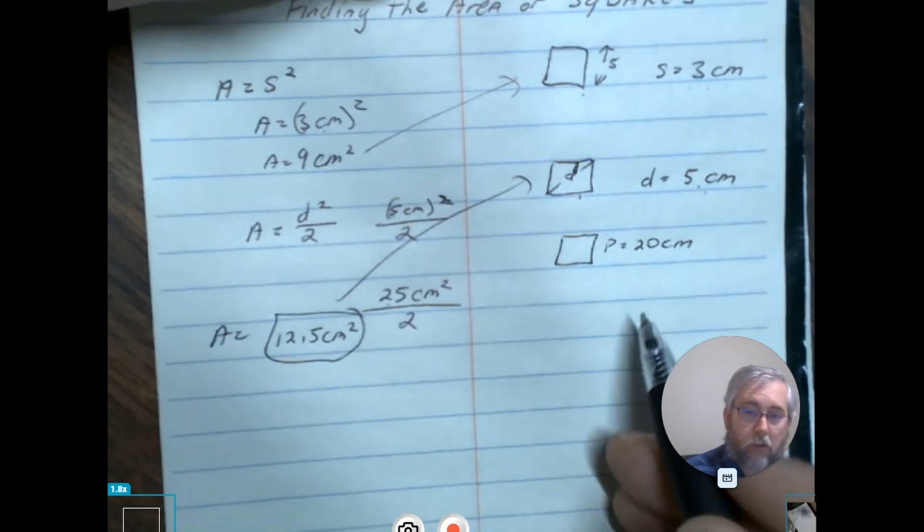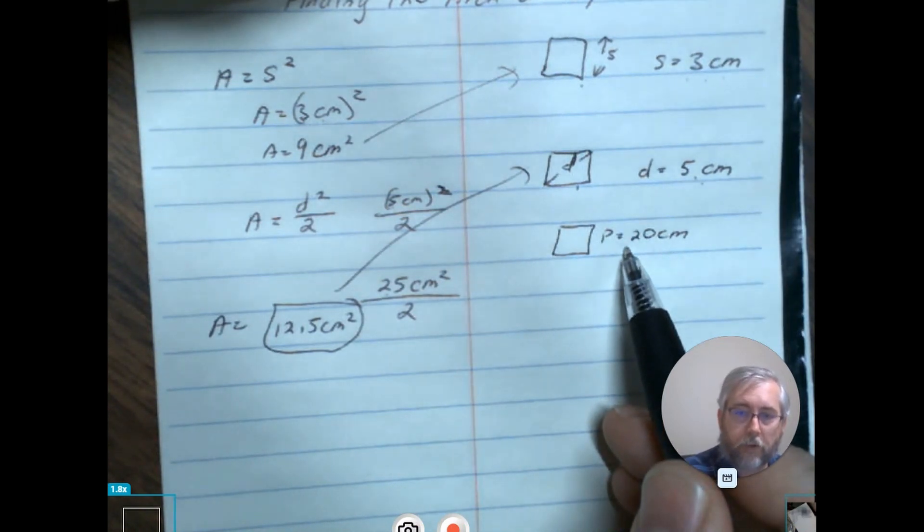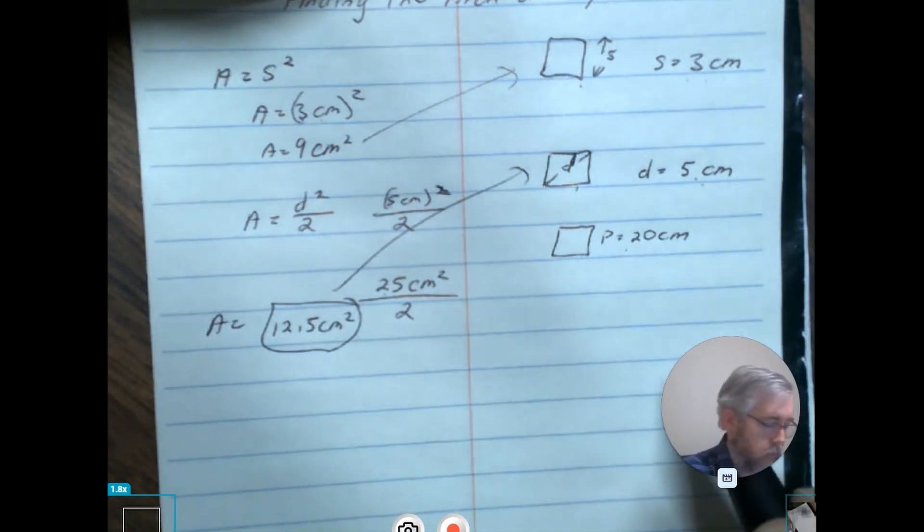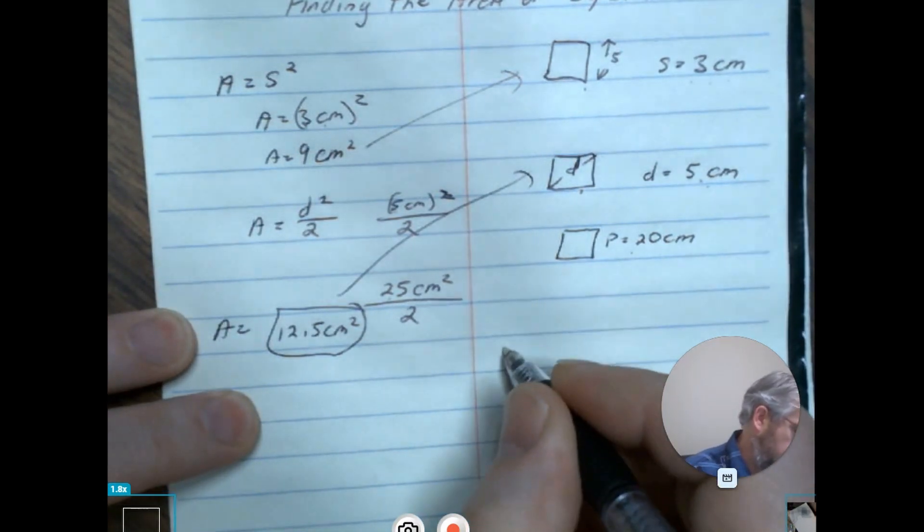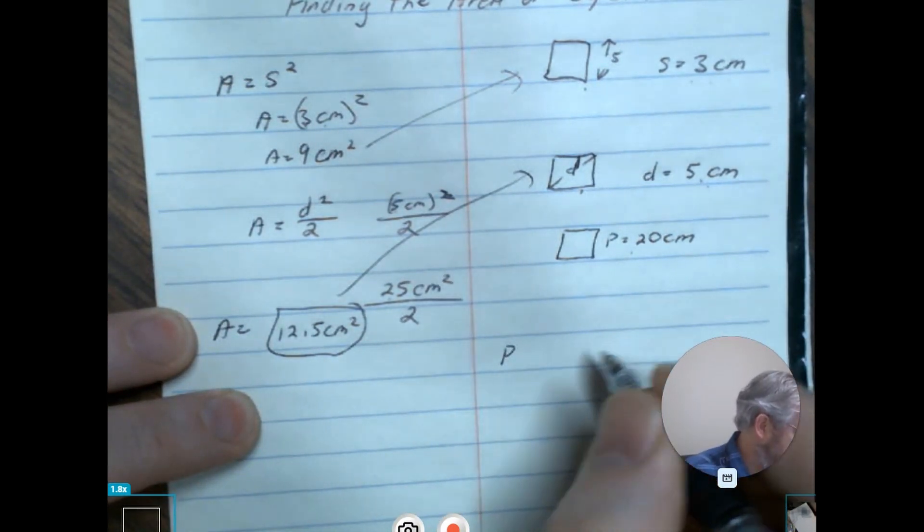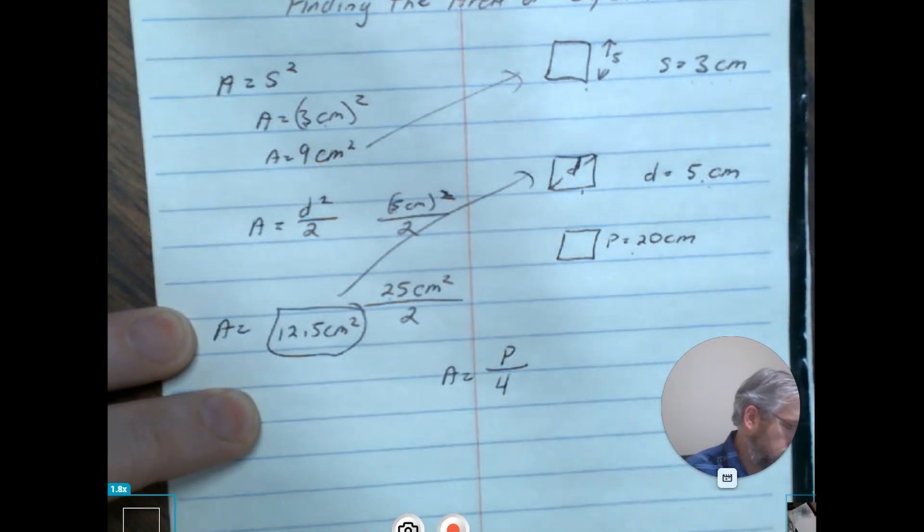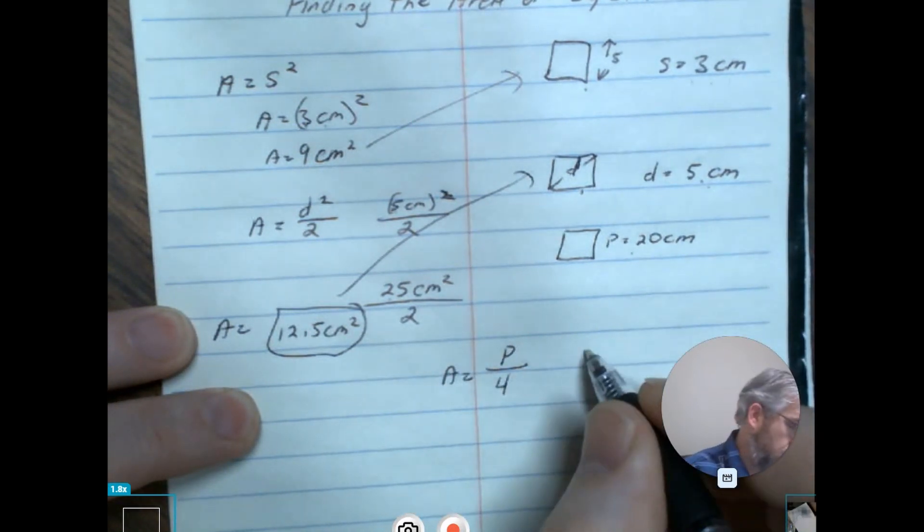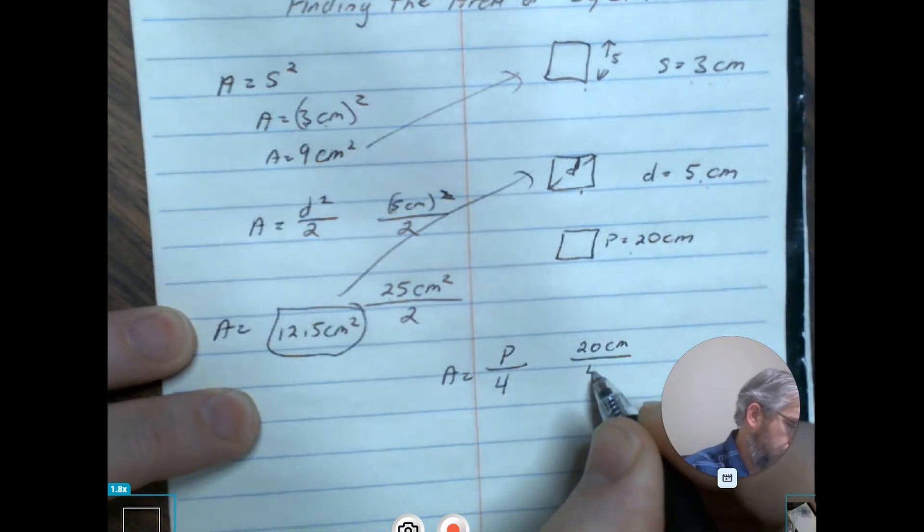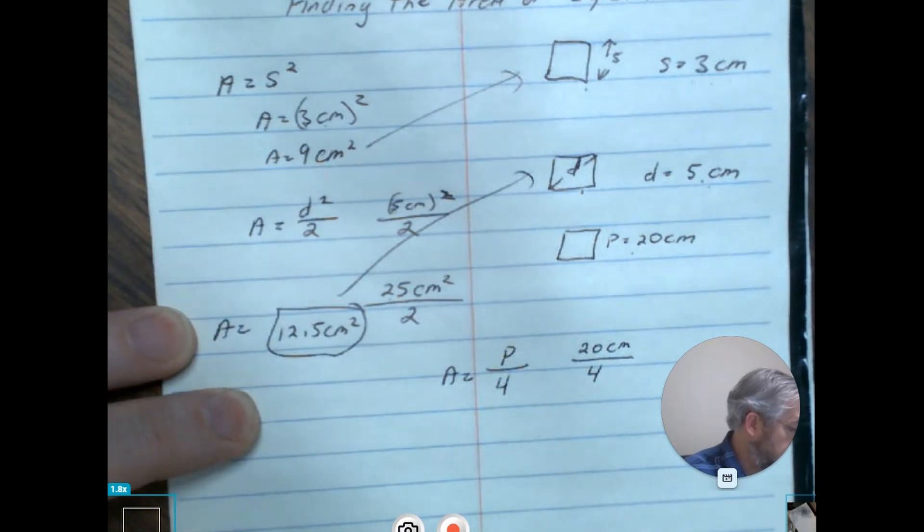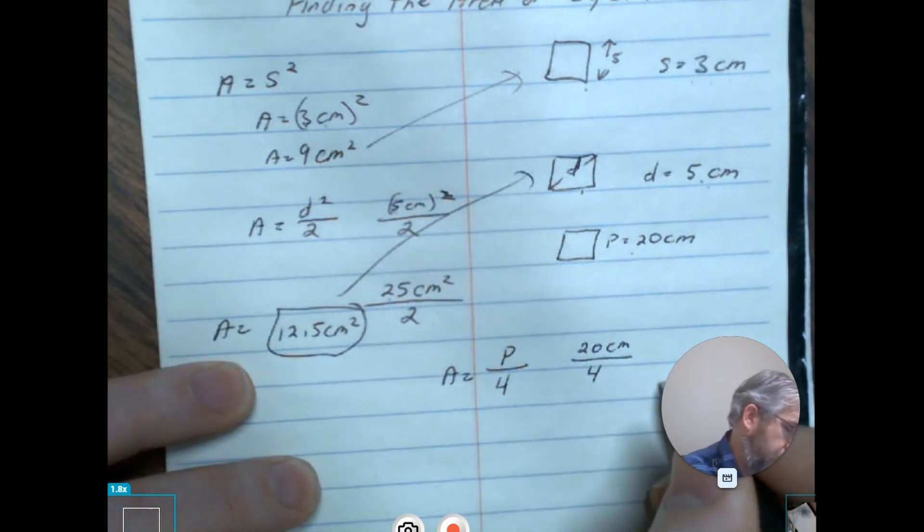Our last one is going to give us a perimeter. This one has a perimeter of 20 centimeters. Here we're going to use yet a different formula, and that is going to be the perimeter divided by four. Let's go ahead and put in our 20 centimeters divided by four, and that's going to be five centimeters.